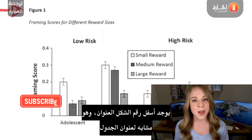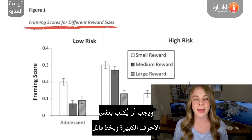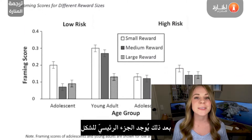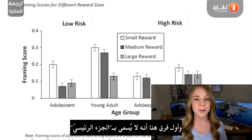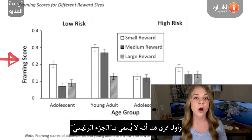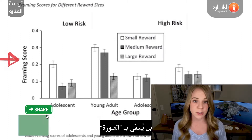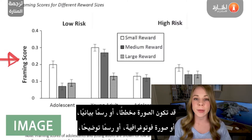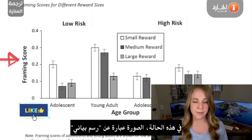Underneath the figure number comes a title, which — similar to the table — should follow the same capital case and italic font. Next, you have the body of the figure. The first minor difference to note is that rather than calling it the body, it's referred to as the image. Depending on what type of figure you're creating, the image could be a chart, graph, photograph, or illustration. In this case, the image is a graph.